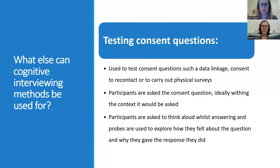What types of consent questions can be tested? Any types of consent questions can be tested. We have tested consent to data linkage for government departments, consent to a follow-up physical survey on a property, and consent to Twitter data being linked to survey data. We usually try to have some context. It's often just a single question that we're testing, so we would ask it amongst some of the other survey questions. They're usually asked at the end of surveys, so they would be placed at the end of the interview as well.